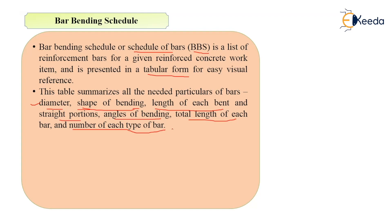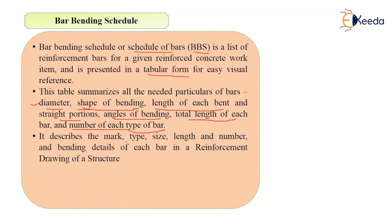The bar bending schedule describes the mark, type, size, length, number, and bending details of each bar in a reinforcement drawing of a structure. Our BBS will describe its mark, its type — what type of bar it is, whether it is tor steel or mild steel — what is the size of bar, whether it is 10mm, 12mm, 8mm, 16mm, or 25mm diameter. Then the length of bar, the number of those particular bars, and its bending details — all these are given in the bar bending schedule.